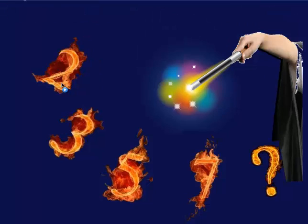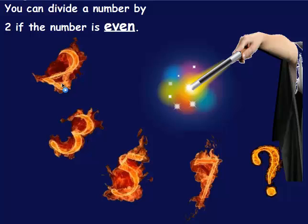You can divide a number by 2 if the number is even. If the number ends in a 0, 2, 4, 6, or 8, it's an even number, and you can use the magic number 2.